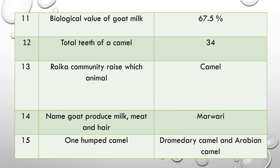Question 14: Name a goat breed that produces milk, meat, as well as hair. This is an important breed. The answer is the Marwari goat. Question 15: Name a one-humped camel. The answer is the Dromedary camel, also called the Arabian camel.